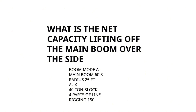Below that I have the configuration written down. We're in boom mode A, main boom 60.3 with a radius of 25 feet. The auxiliary head is going to be our first deduction. We have a 40-ton block, we're going to be using four parts of line, and our rigging is going to be 150 pounds. These are all our deductions.